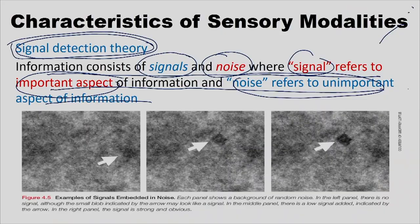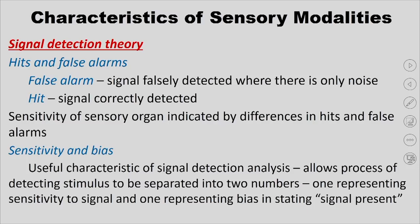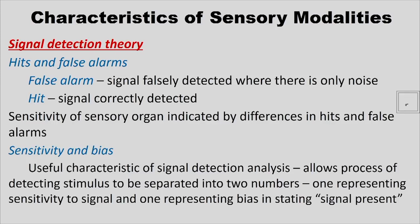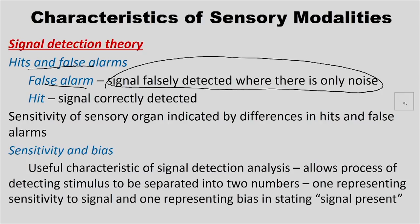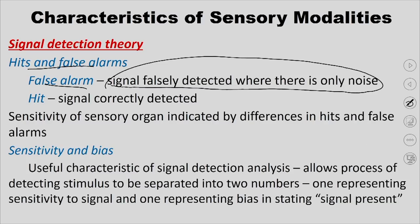Today's class will continue from where we left off. Signal detection theory has two parameters: one is called the hit and the other is called the false alarm. A false alarm is when a signal is falsely detected where there is only noise — that is, the signal is not present but people say it is. A hit is when you correctly detect the signal from a no-signal situation. For now, remember what a false alarm and a hit are.